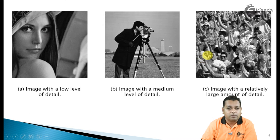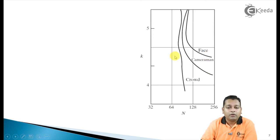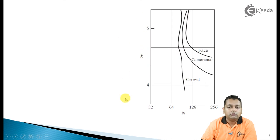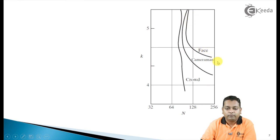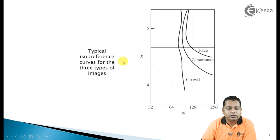Comparing these three images, we can plot a simple graph with two dimensions: capital N, the total number of pixels in the digital image, and small k, the discrete intensity levels. For better representation, we always want both N and k to be high. The three curves on the graph correspond to the face image (A), the cameraman (B), and the crowd (C), which has the most information content. These are the typical ISO preference curves for the three types of images.